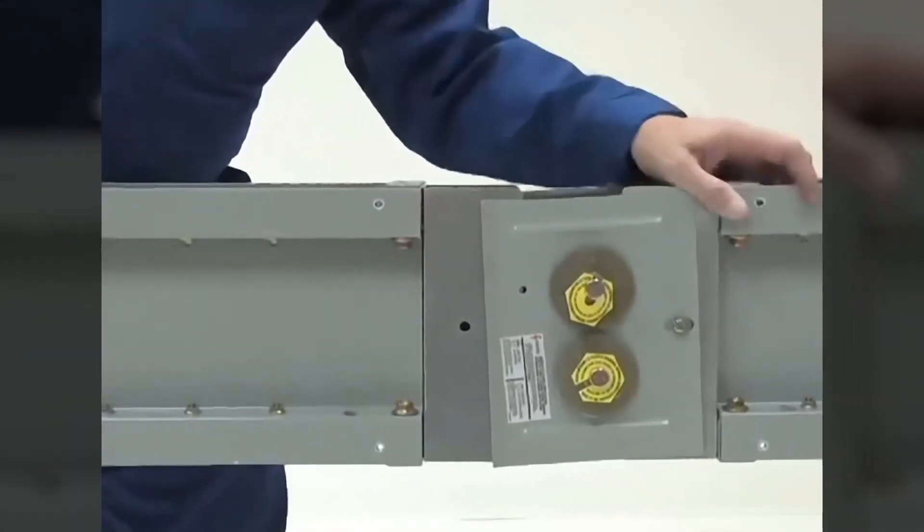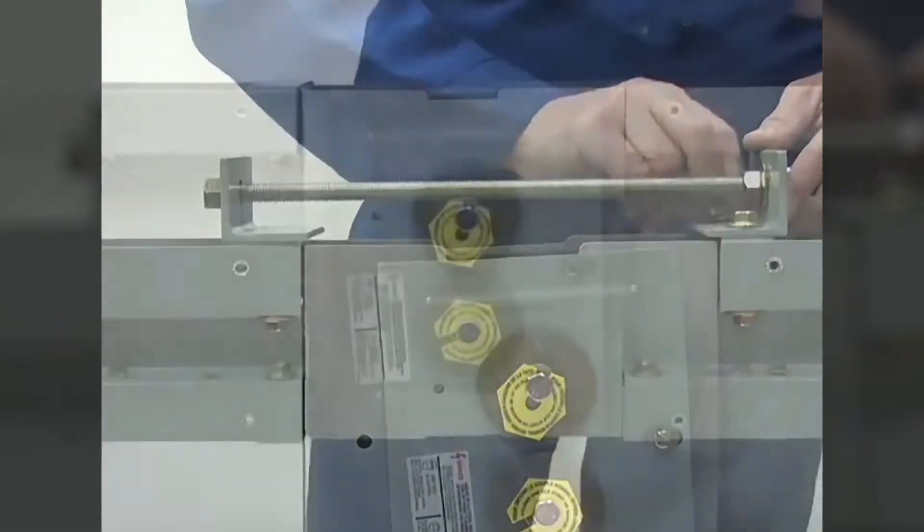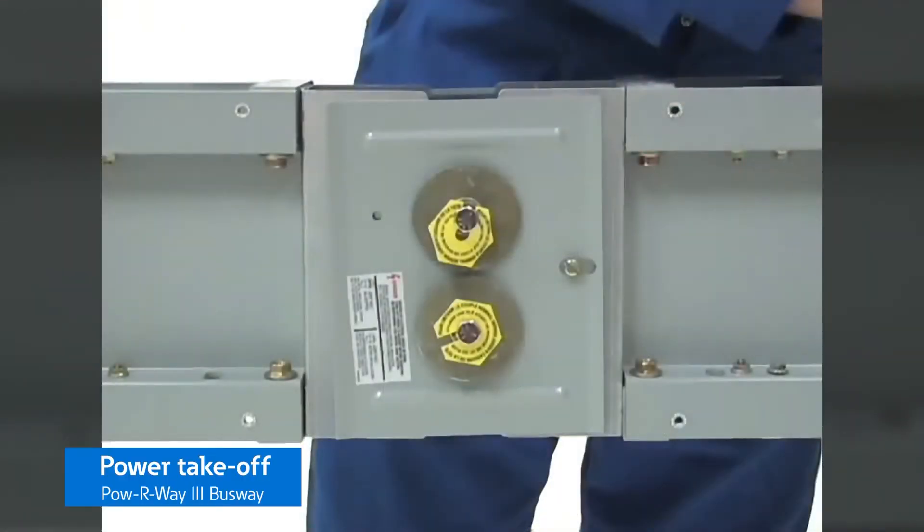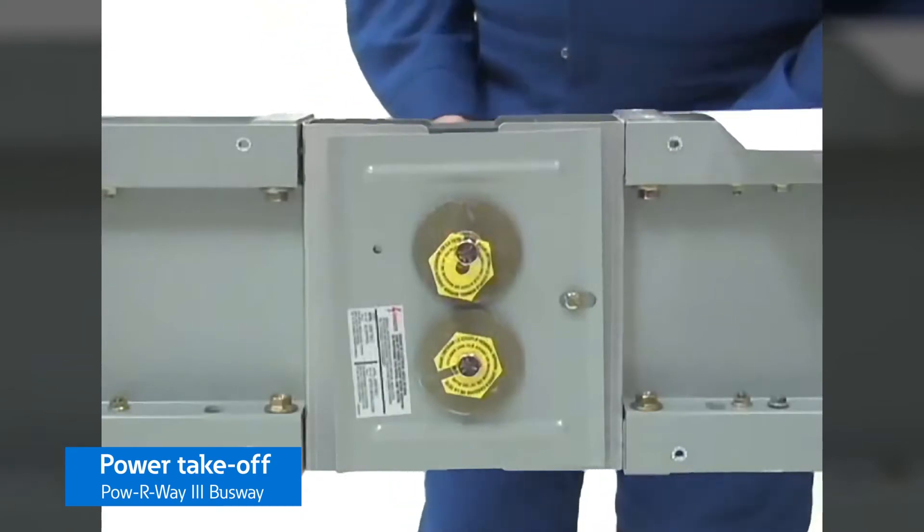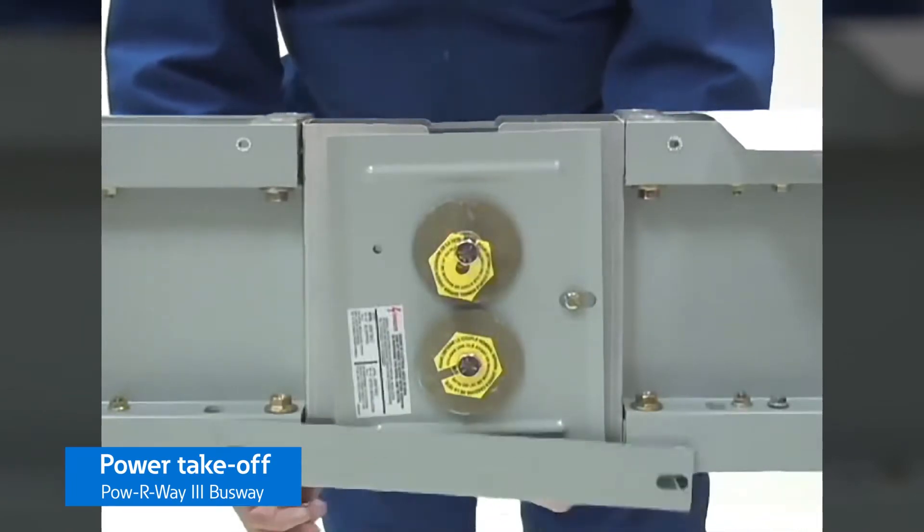To install the power takeoff, first install two sections of busway, then attach a joint cover to the side opposite where the connections will be installed.